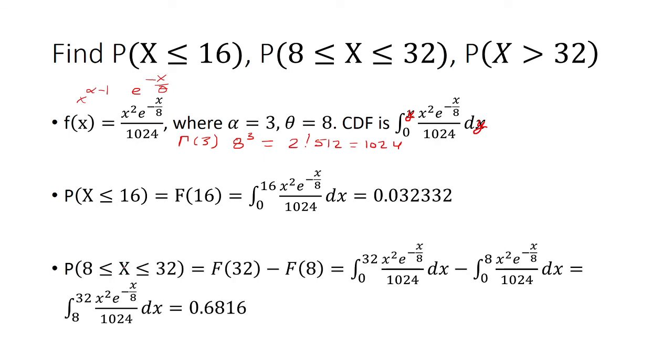And to find the probability that x is between 8 and 32, basically, we're going to take the area all the way up to 32, and then subtract the area all the way up to 8. When you subtract these areas, you're left with the area between 8 and 32.